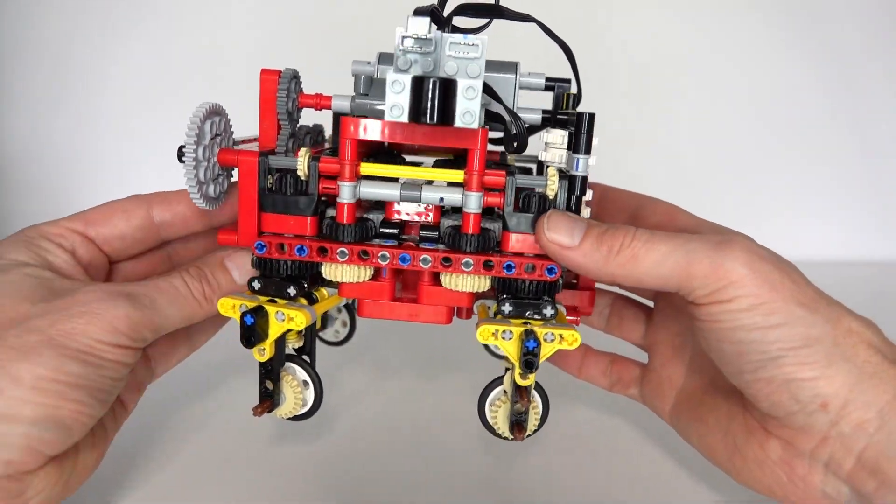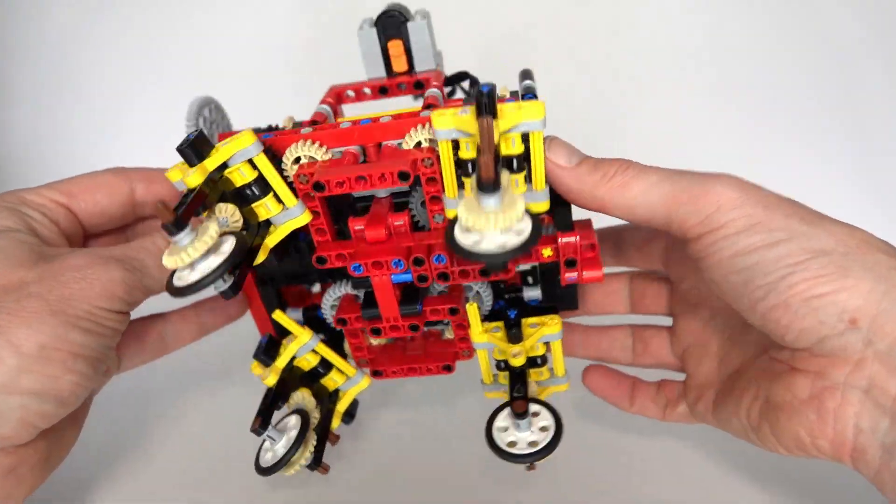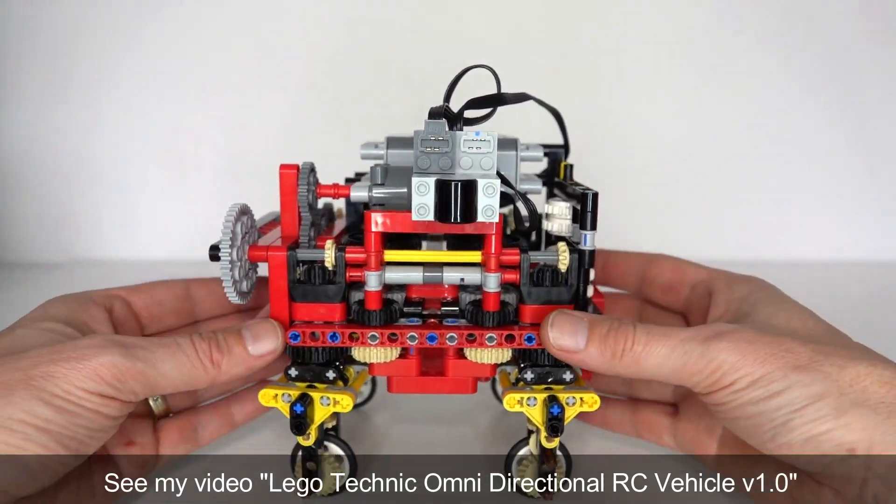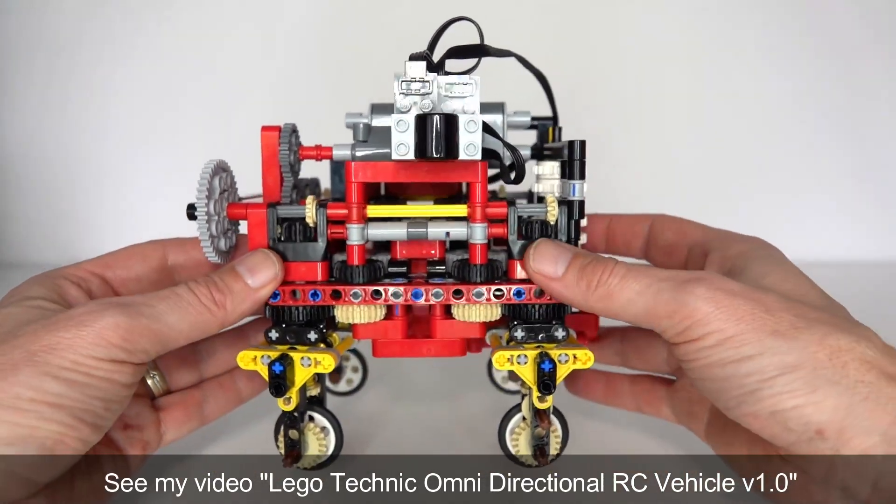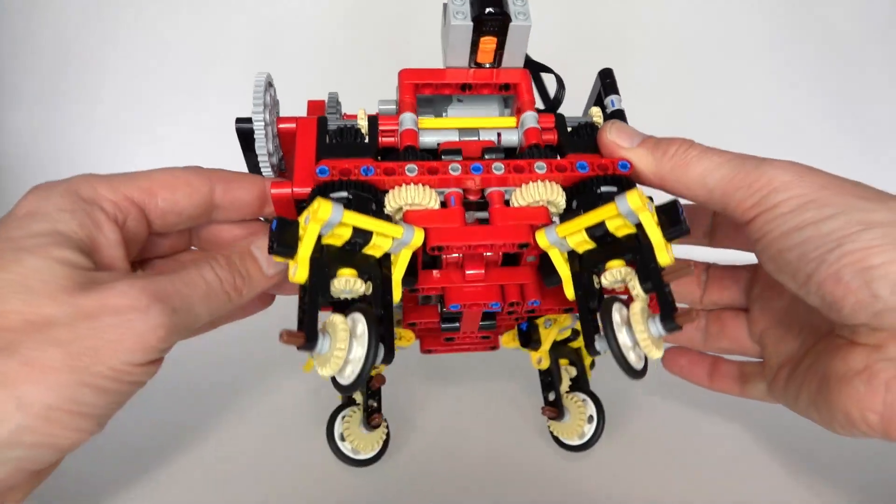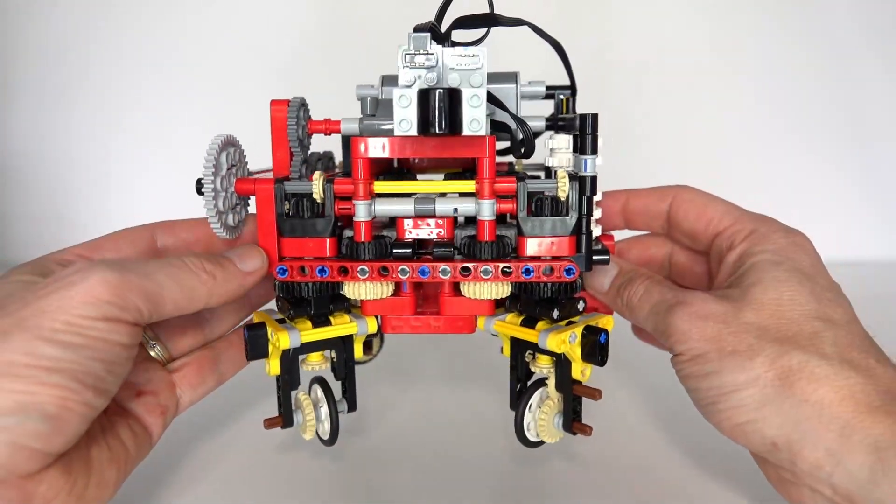Now this idea for this video came about from a project that I presented last week, my attempt at creating an omnidirectional vehicle. And the idea of this vehicle was that it could drive forwards and backwards and then change the mode and turn the wheels inwards like this and be able to rotate on the spot in order to change directions.